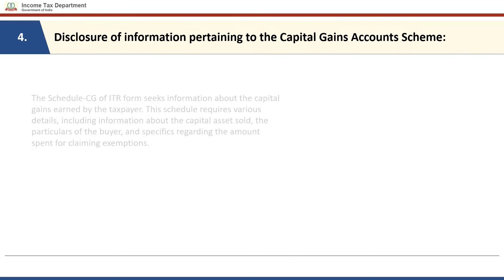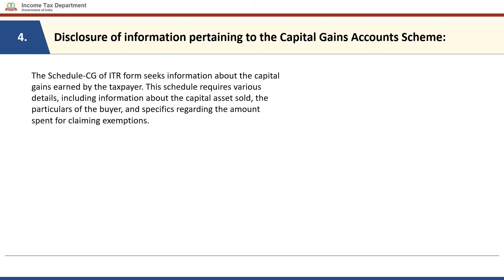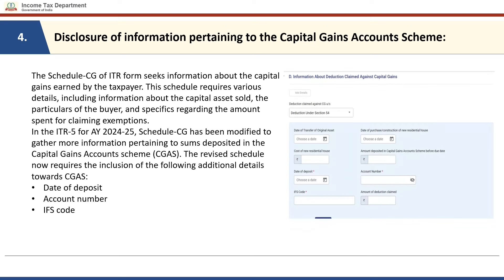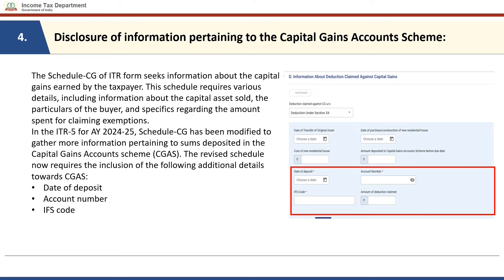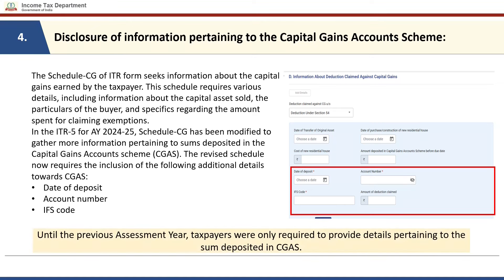With respect to the capital gains account scheme, Schedule CG of the ITR form contains the relevant information. This schedule requires various details including information about the capital assets sold, the particulars of the buyer, and the specifics regarding the amount spent for claiming exemptions. In Form ITR-5 for assessment year 24-25, Schedule CG has been modified to gather more information pertaining to sums deposited in the capital gains account scheme. The revised schedule now requires inclusion of the date of deposit, account number, and the IFSC code. Until the previous assessment year, taxpayers were only required to provide details regarding the sum deposited.